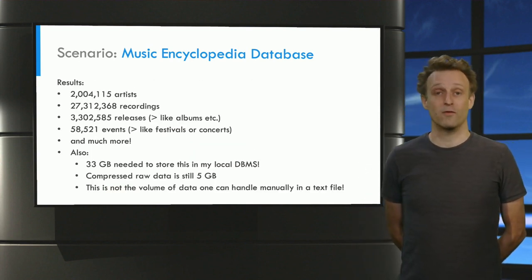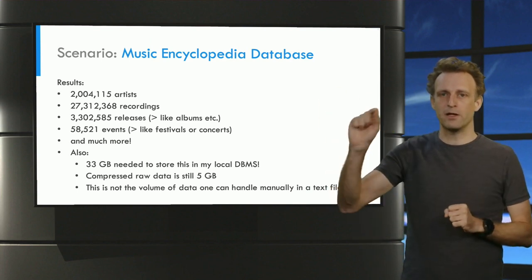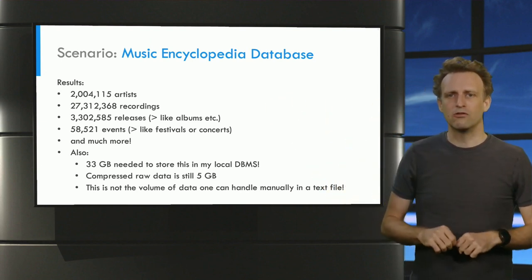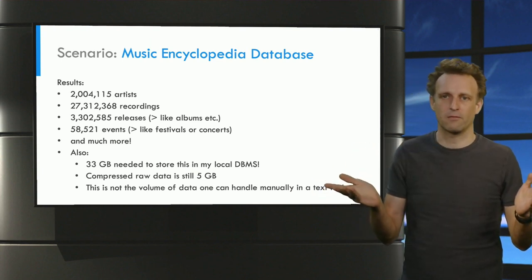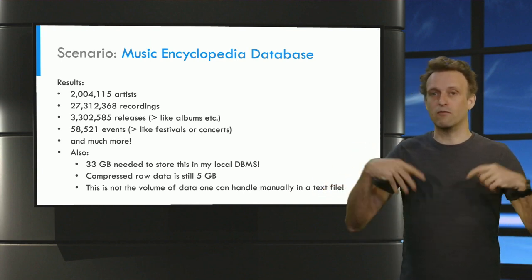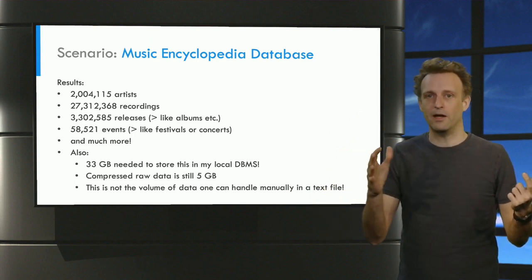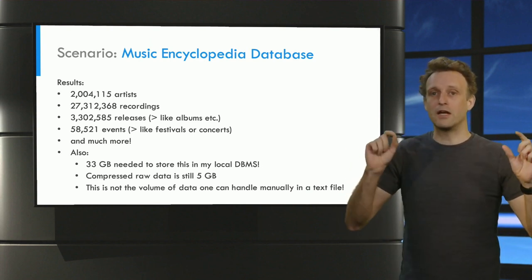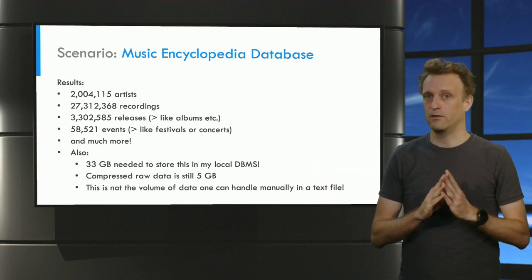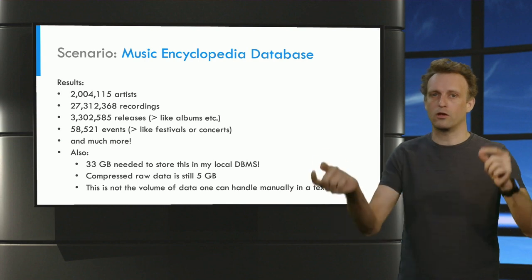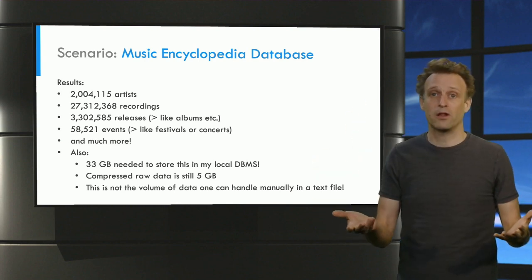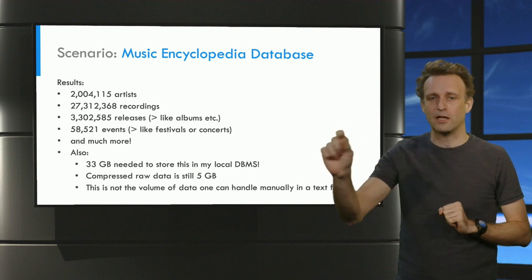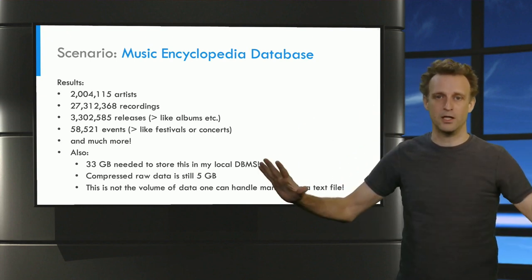Let's look at what we get. We get over 2 million artist records with over 27 million recordings and over 3 million releases. Releases are things like albums or singles. This is also a lot of data in sheer volume — the compressed data dumps I downloaded were 5 gigabytes, and after extracting and importing all these dumps, they take up 33 gigabytes on my hard drive. This is certainly way more data than you would want to manually handle in a comma-separated value text file, and I would not recommend trying to query such data directly from a file without using the powers of a database management system.